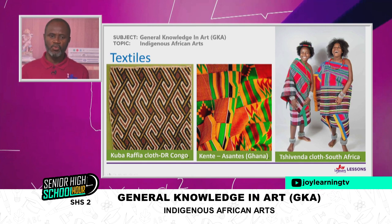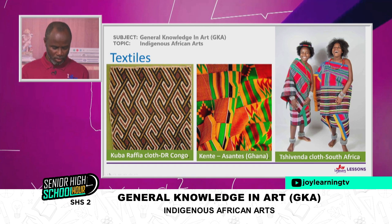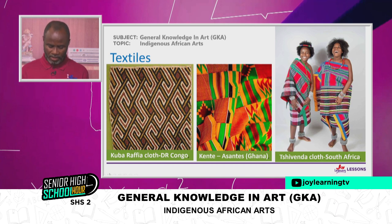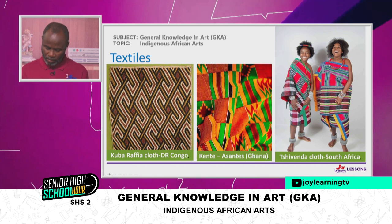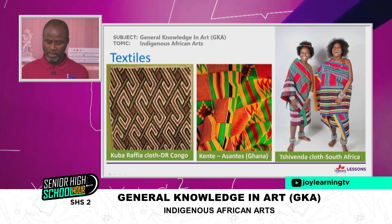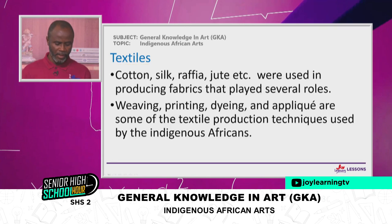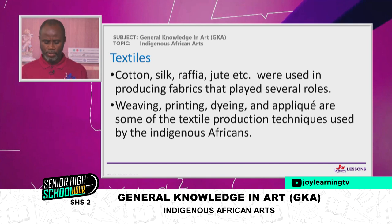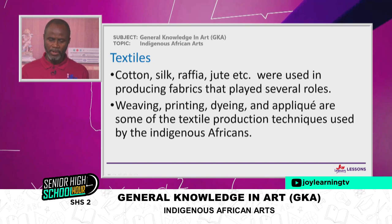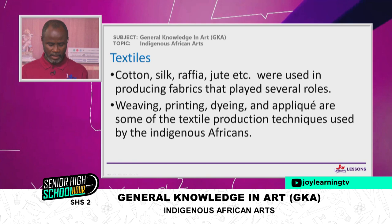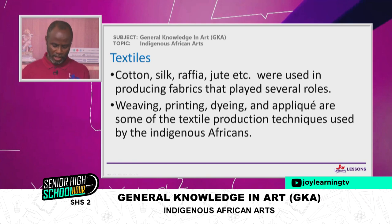Now let's move to textiles. On our screens we have beautiful textile designs from Africa. On the far left is the kuba raffia cloth from Congo. In the middle is the kente of the Ashantis. On the right-hand side is the shivenda cloth from South Africa. African cloth and textiles are very colorful. Cotton, silk, raffia, jute, and similar materials are used in producing such fabrics. The techniques used were weaving, printing, dyeing, and appliqué, and some of these textile productions were mainly of indigenous African origins.